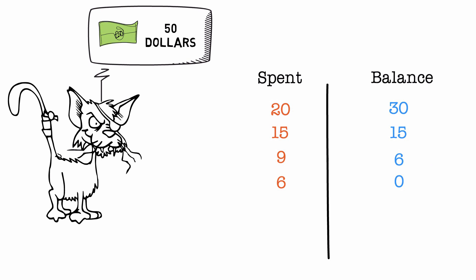Now let us total both sides. The amount I spent adds up to $50. And we do the same thing on the right and hey, we get $51. Where did this extra dollar come from?